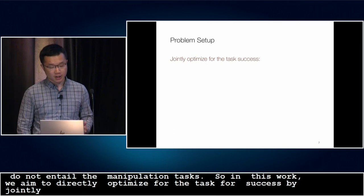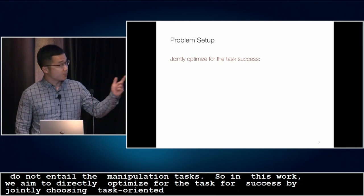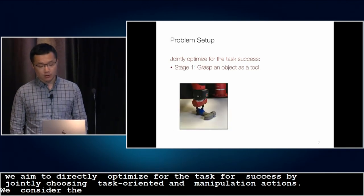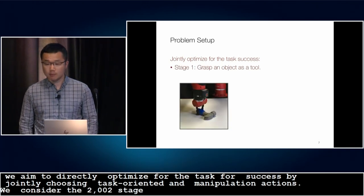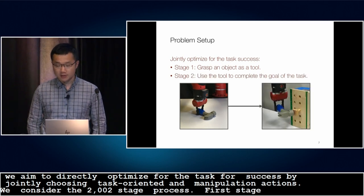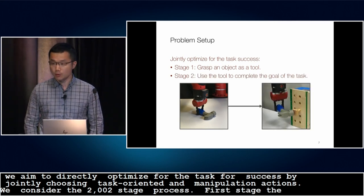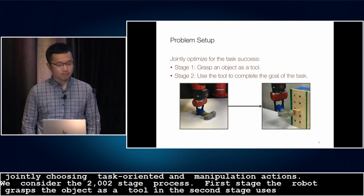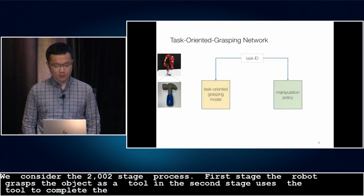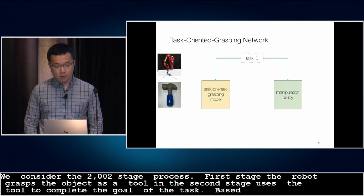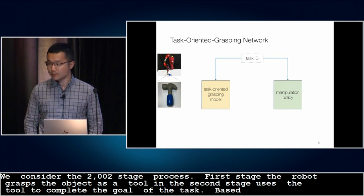We consider tool manipulation as a two-stage process. In the first stage, the robot grasps an object as a tool. In the second stage, the robot uses the tool to complete the goal of the task. Based on previous works including GQCNN, we propose our task-oriented grasping network.